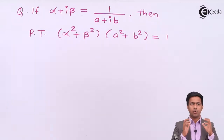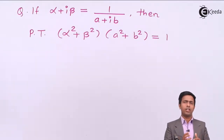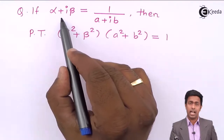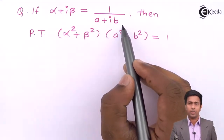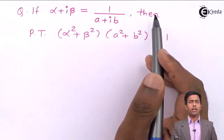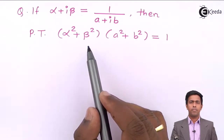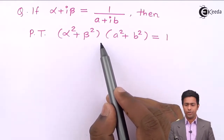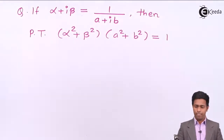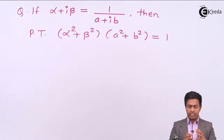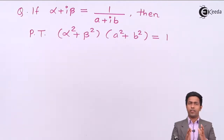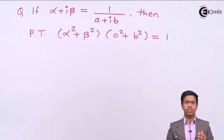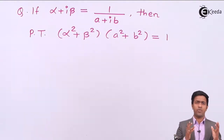Hello friends. We solve a numerical based on the concept of conjugate of complex numbers. The value of alpha plus i beta is equal to 1 upon a plus ib, and we have to prove that alpha square plus beta square, into a square plus b square, is equal to 1. The question is how to get this, because in the proof we want the square of each term — alpha square, beta square, a square, b square — whereas in the given expression we only have alpha, beta, a, and b without square terms.